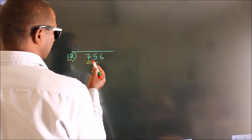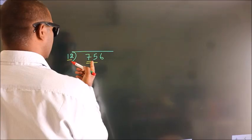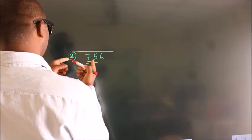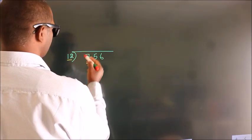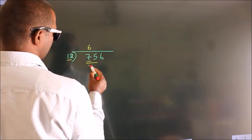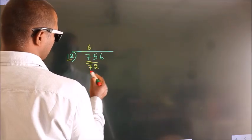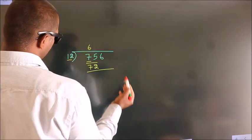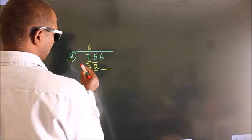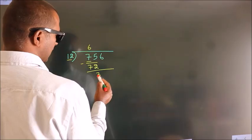75. A number close to 75 in the 12 times table is 72. Now we subtract. We get 3.